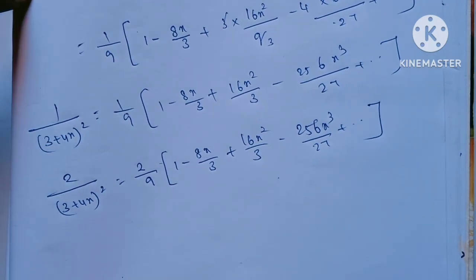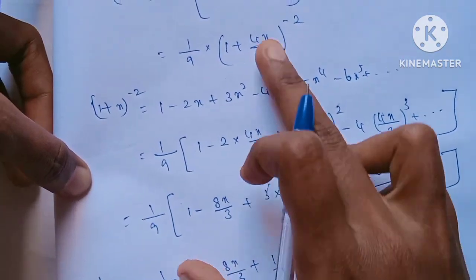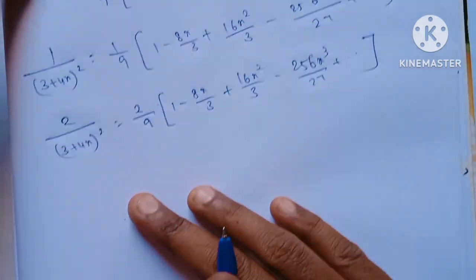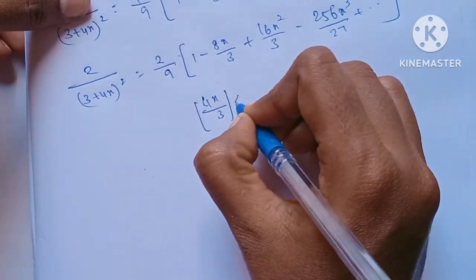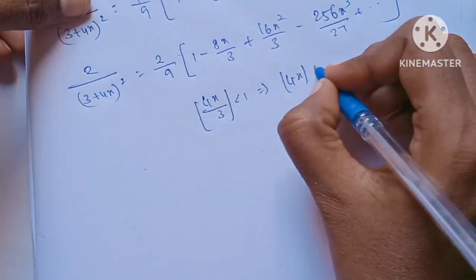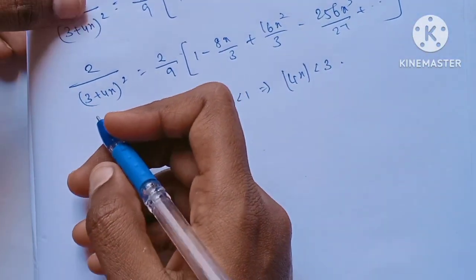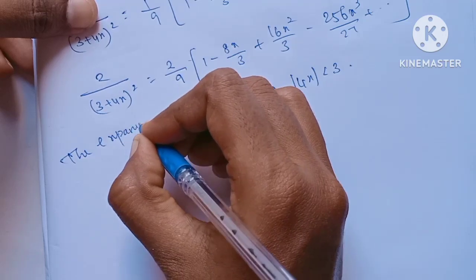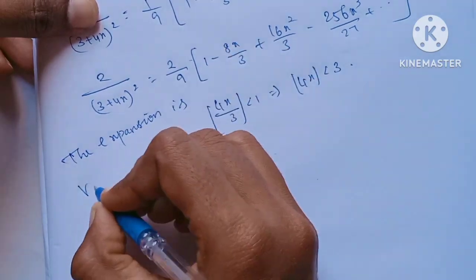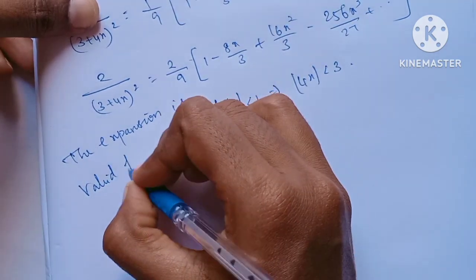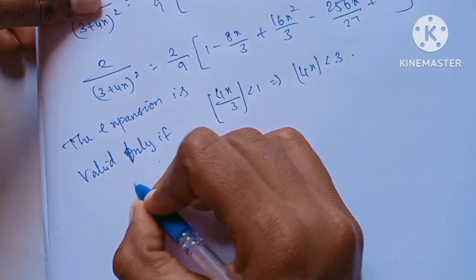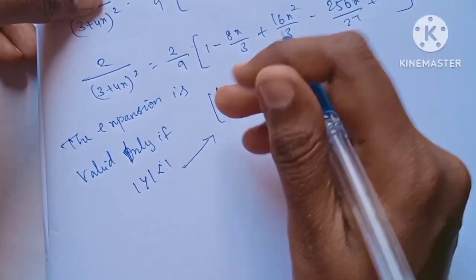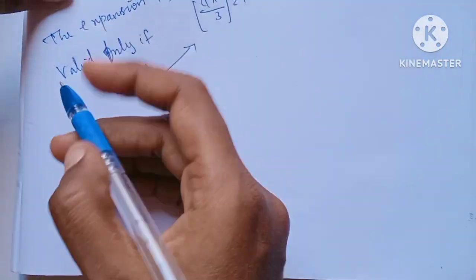The expansion is valid only when the modulus of y is less than 1, so the condition is |4x/3| < 1. This completes the second question.